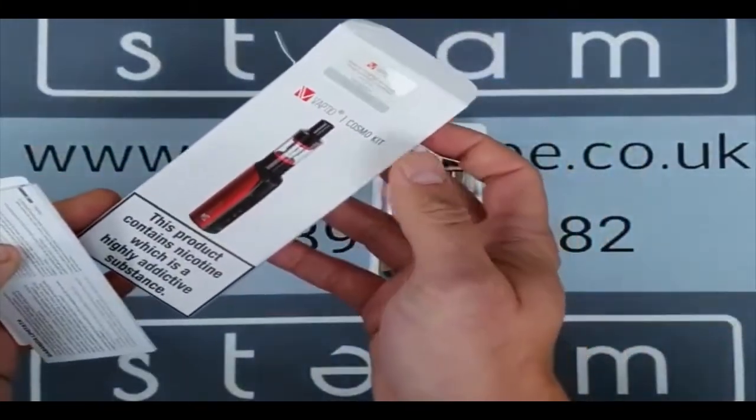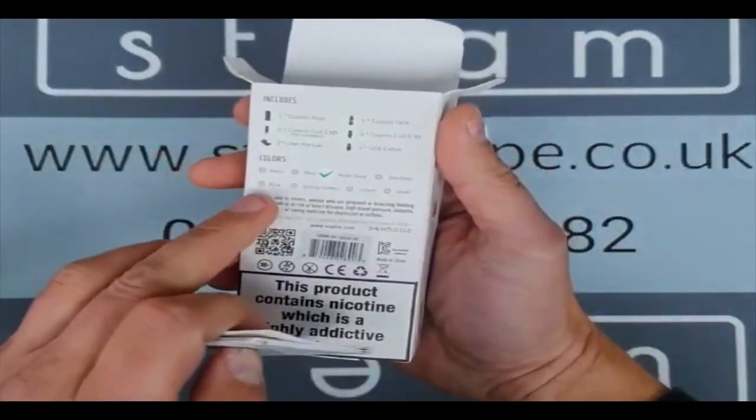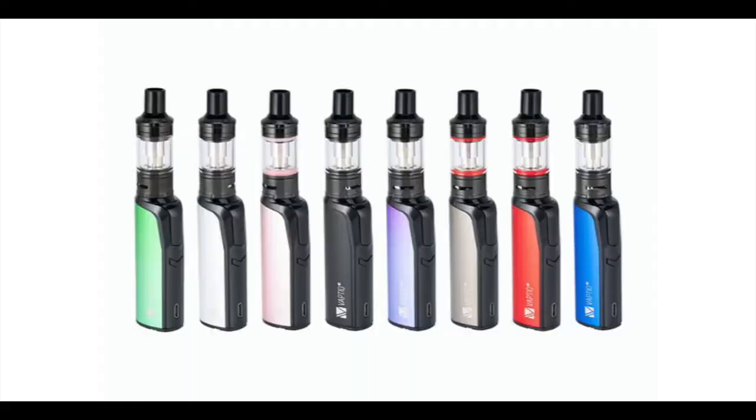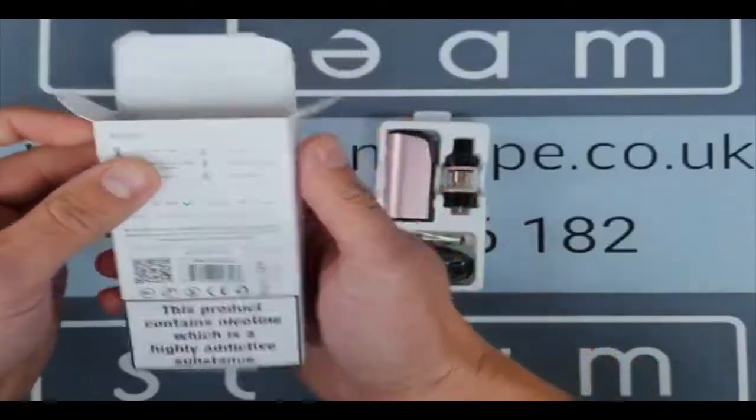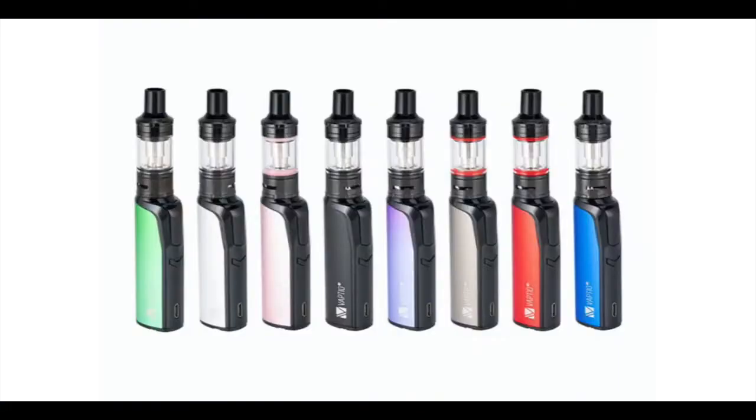Vaptio Cosmo kit comes in eight different colors: black, red, rose, gold which is this one, sky grey, blue, green, violet, and silver.